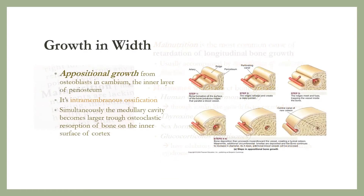Bone increases in width by means of appositional growth from the osteoblasts in the deep or inner layer of periosteum, the process being one of intramembranous ossification. Simultaneously, the medullary cavity becomes larger through osteoclastic resorption of bone on the inner surface of the cortex.